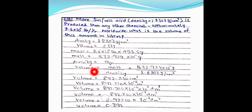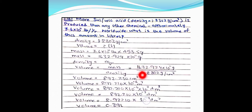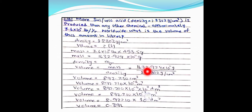The volume is first calculated in cubic centimeters, then converted to cubic decimeters, which equals liters. To convert to cubic decimeters, multiply by 10³, and since deci = 10⁻³, these cancel, simplifying the unit conversion to get the final volume in liters.